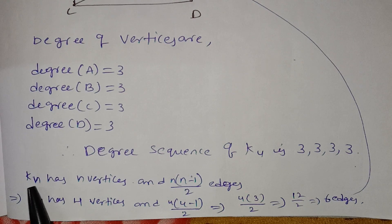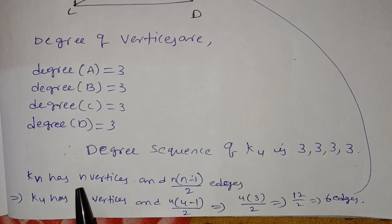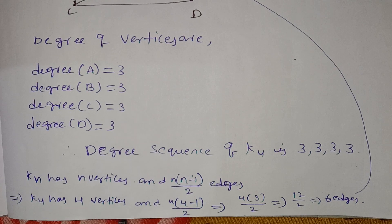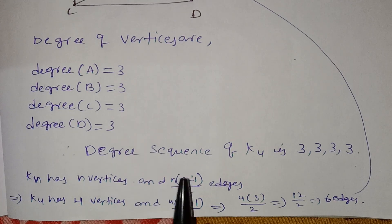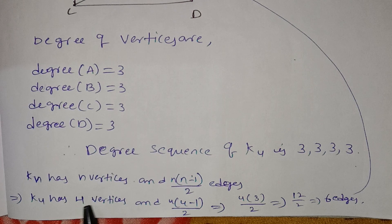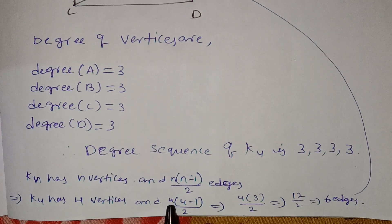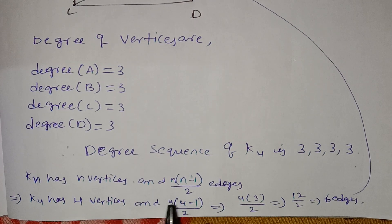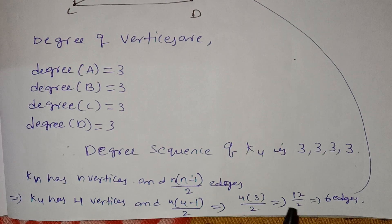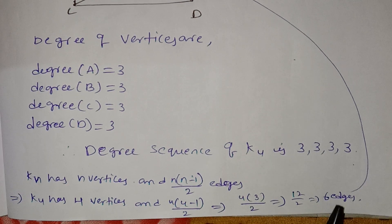For Kn, we have n vertices. K4 has n = 4 vertices. So n = 4: 4 into (4 minus 1) divided by 2, which is 4 × 3 / 2 = 12 / 2 = 6. So K4 has 6 edges.